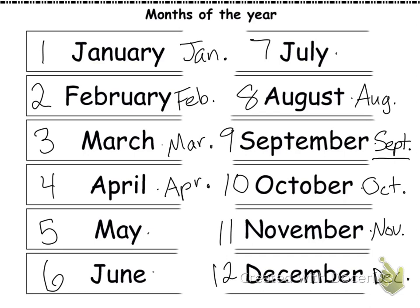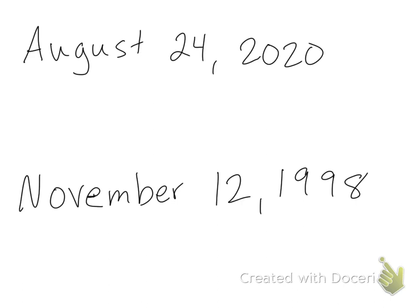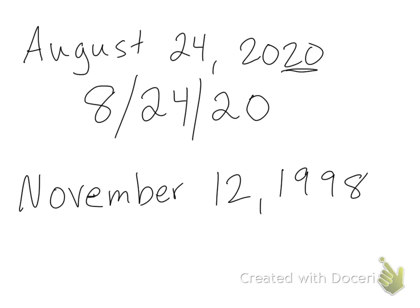When we write the year using digits, we only write the last two digits of the year. So let's say today's date is August 24th, 2020. I would write eight for August, then a slash mark or dash, then 24, then only the last two numbers of the year — so it'd be 20. If I wanted to write November 12th, 1998, it would look like this: November is 11, it's the 12th, and the year was 98.